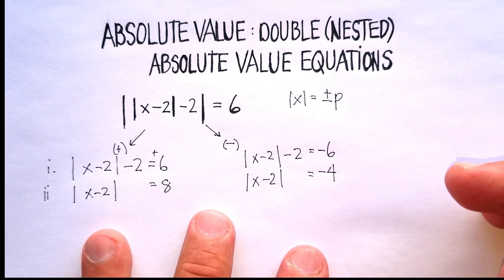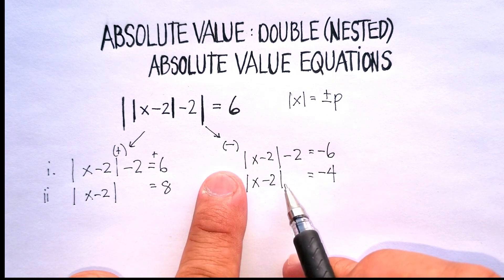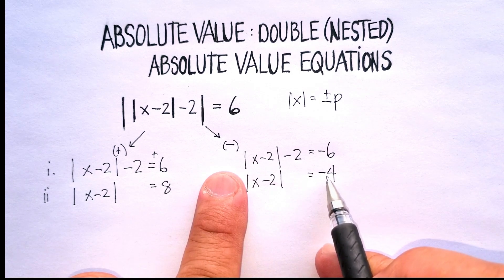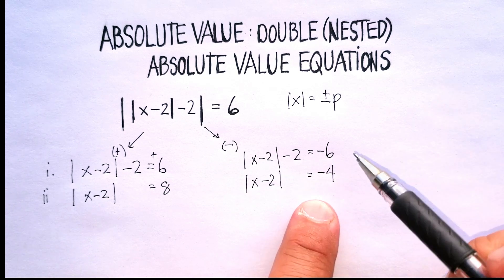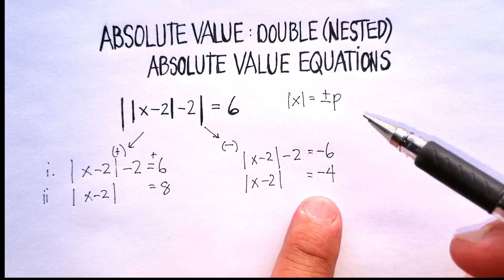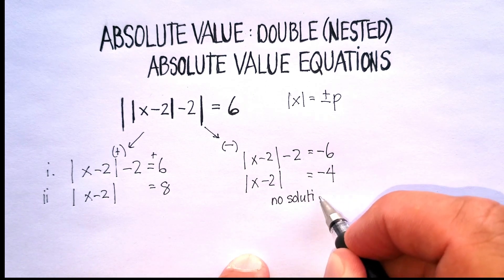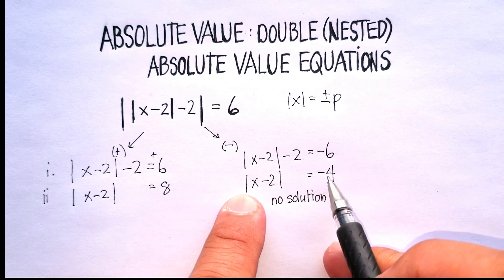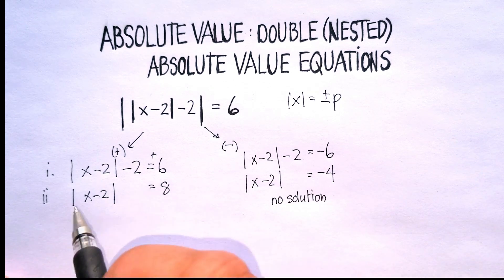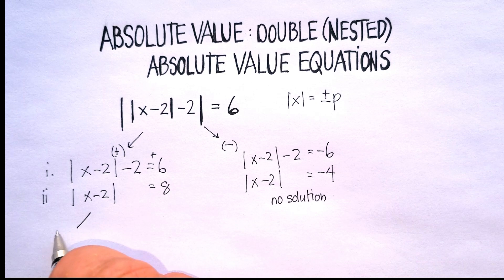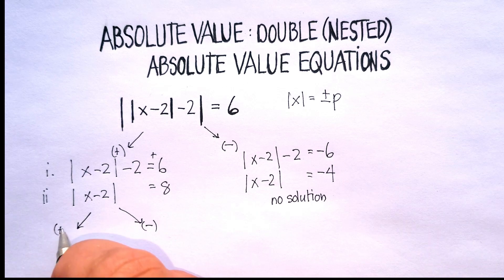This is actually going to simplify our problem a little bit. If we look over here, the absolute value of some number can never be negative, because you're always talking about the number of units you are away from zero, and you can't have a negative number of units. So this is no solution. Whenever you have the absolute value of something equal to a negative number, it's not going to be possible. Over here, we can break this up into two cases — my positive case and my negative case.